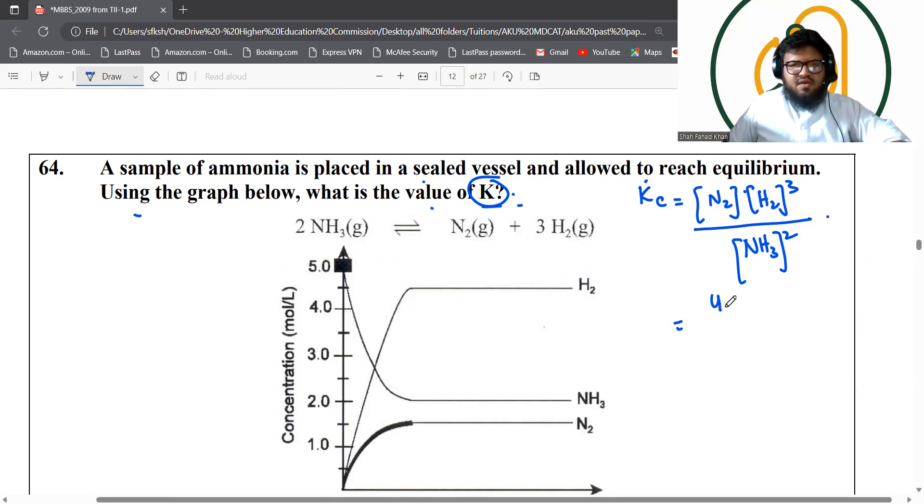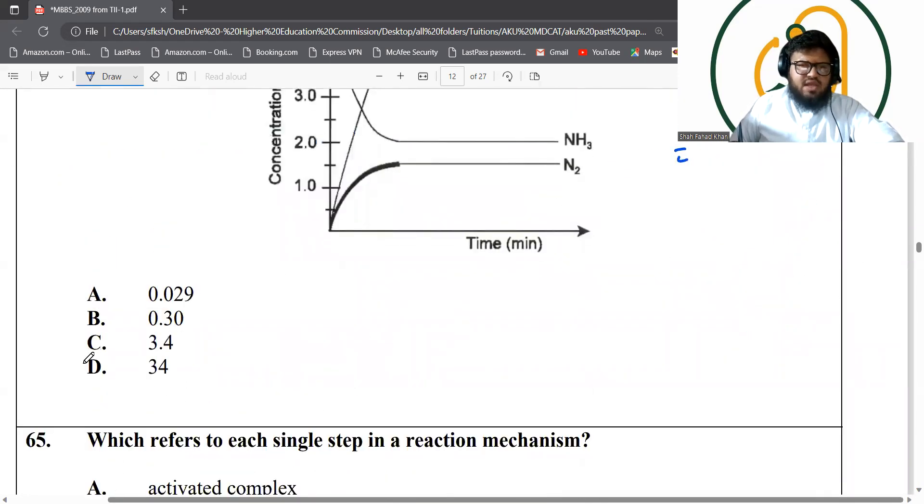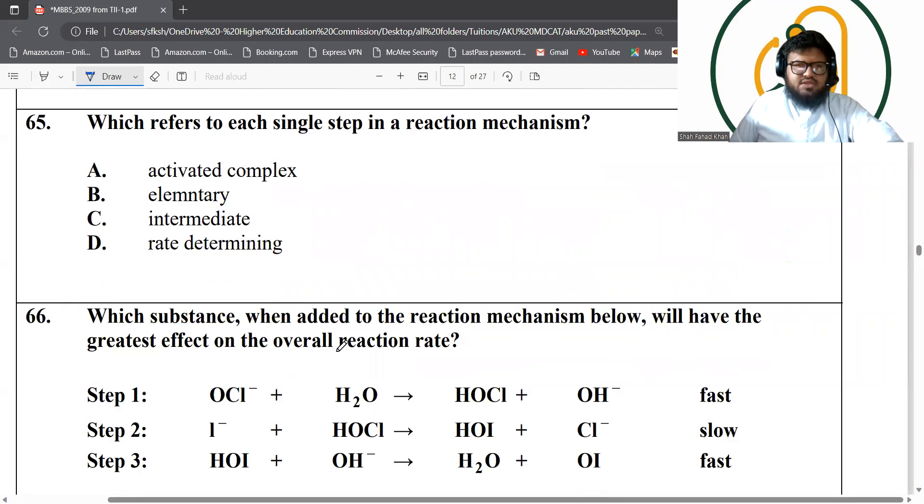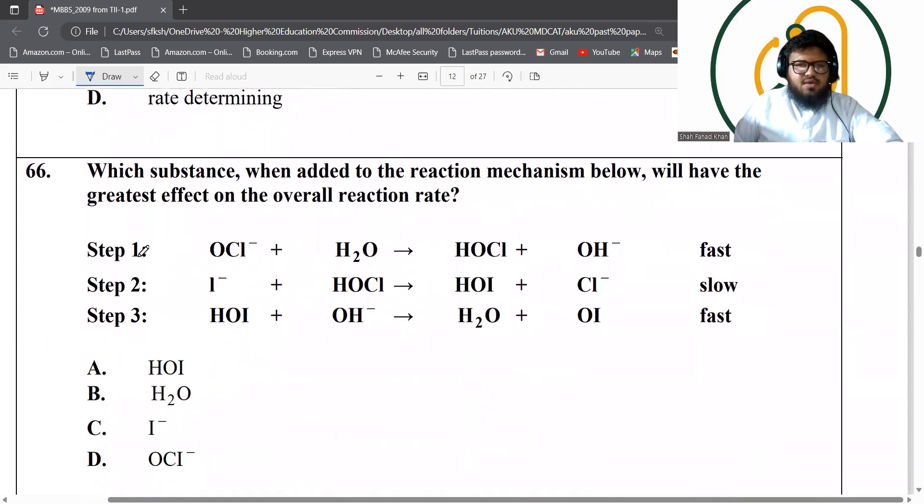So you add in the equilibrium concentrations only in this equation. So you've got 4.5 cube multiplied by nitrogen, which is 1.5 upon ammonia, which is 2 times 2, which is 4 basically. So essentially you multiply all of this stuff and you get an answer of 34. That's the answer. What refers to each single step in the reaction mechanism? That's called an elementary step. This is what you will need to learn.